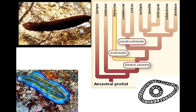Flatworms. Both flatworms and roundworms have bilateral symmetry, which means that they can be divided along only one plane into mirror image halves. This bilateral symmetry is what separates them from the sponges and the cnidarians studied earlier. This major evolutionary step is what allows for the body to evolve different organs.